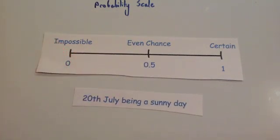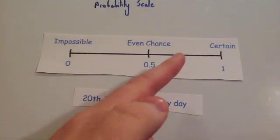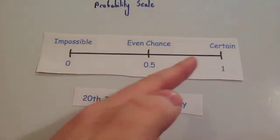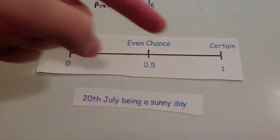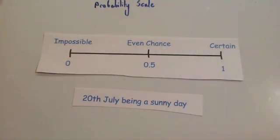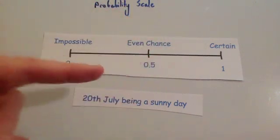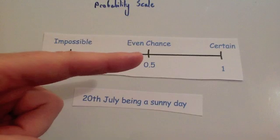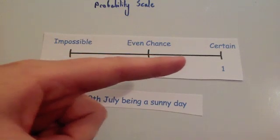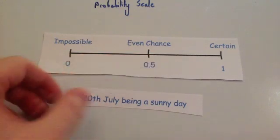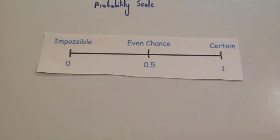The 20th of July being a sunny day — given that July is a summer month, it's probably quite likely to happen, so it's going to be up here somewhere. We don't know exactly, and we might need historical data to find a good estimate, but it's probably quite likely.